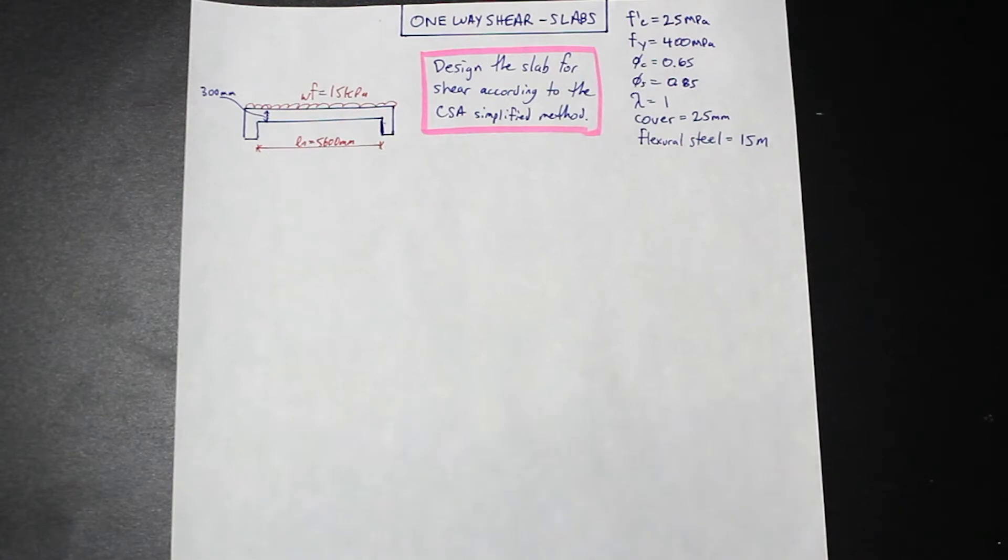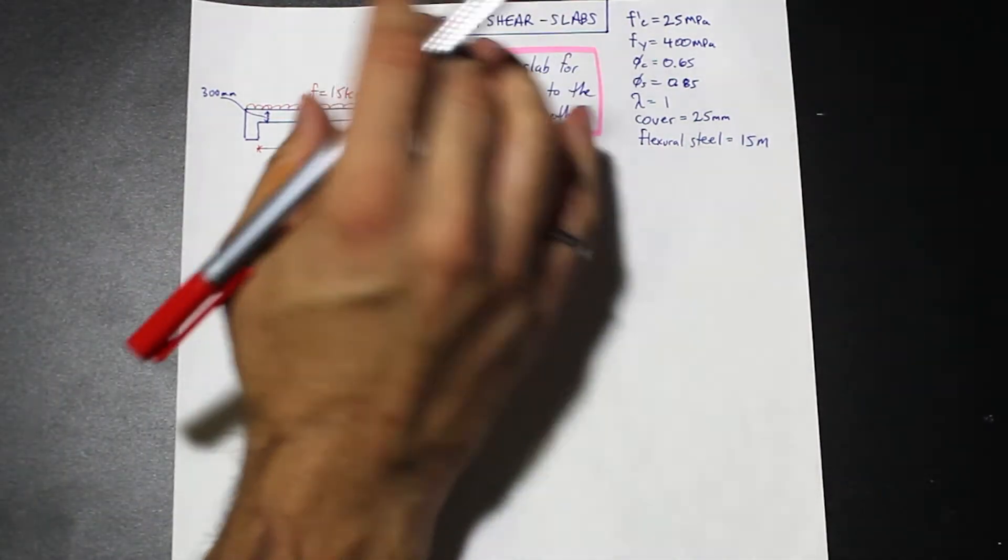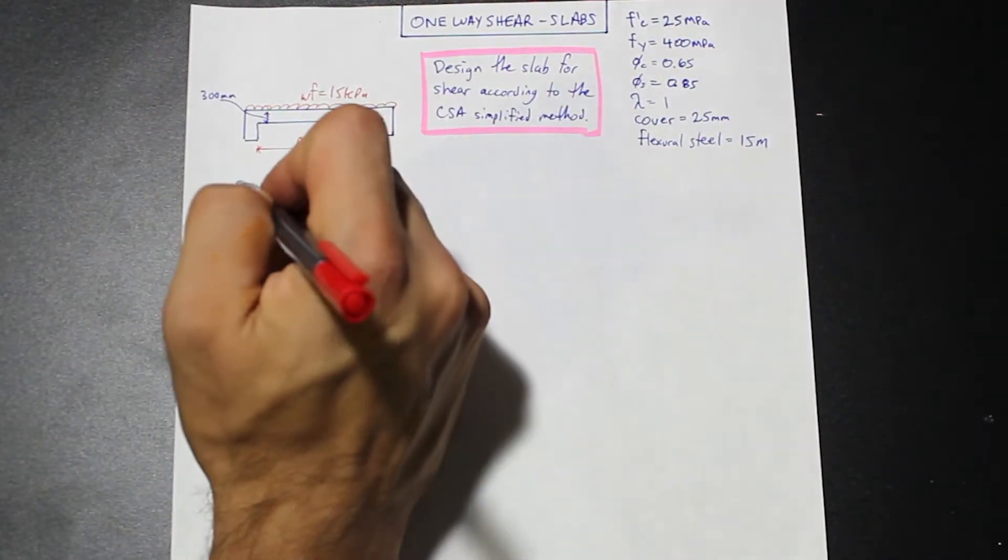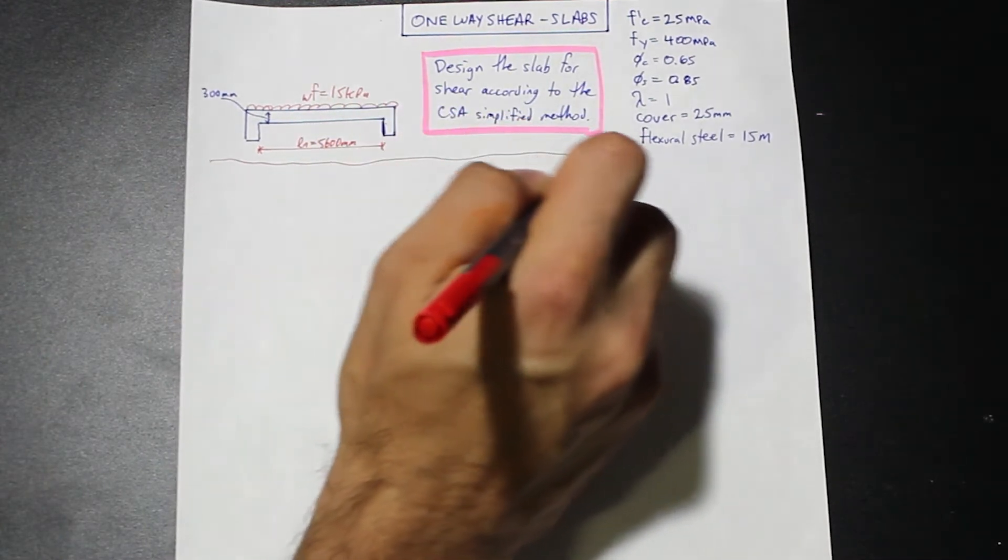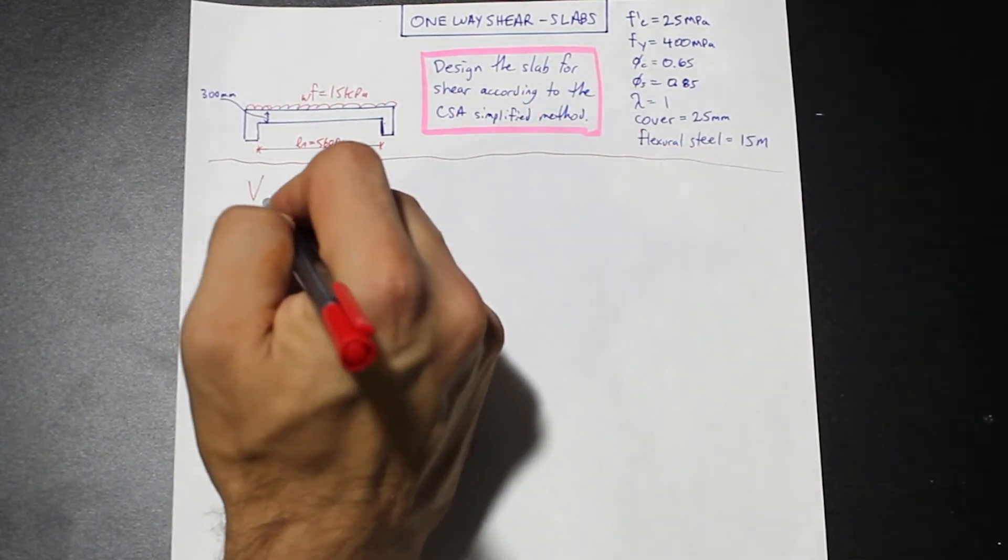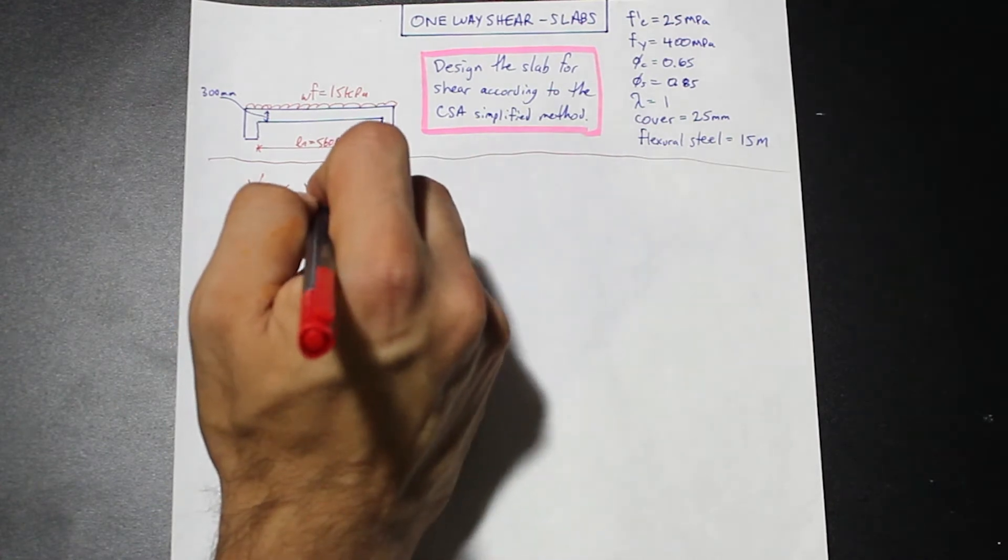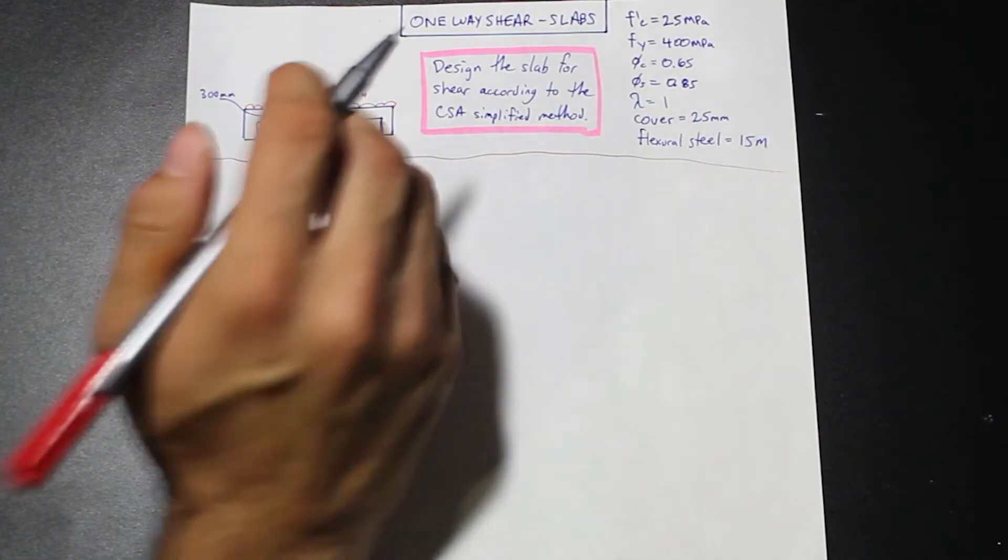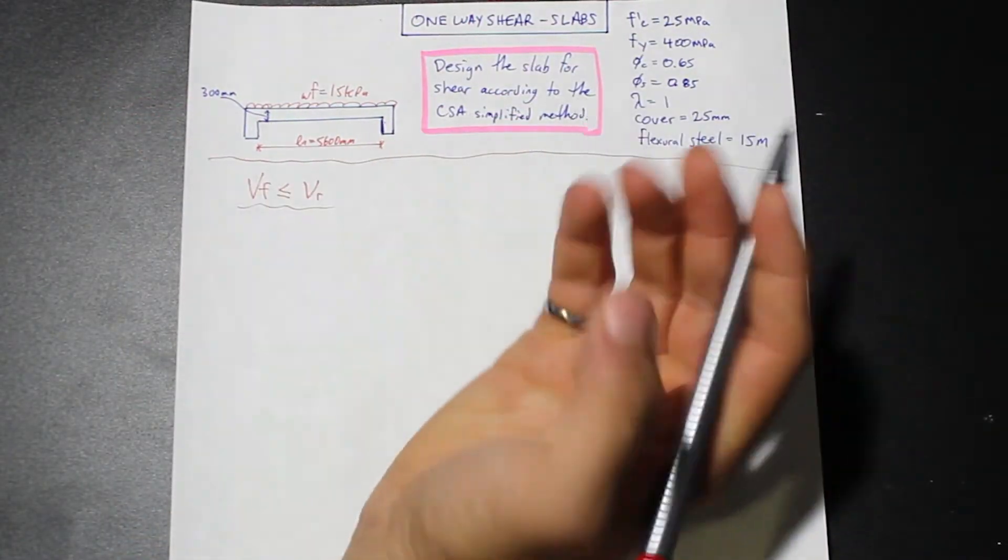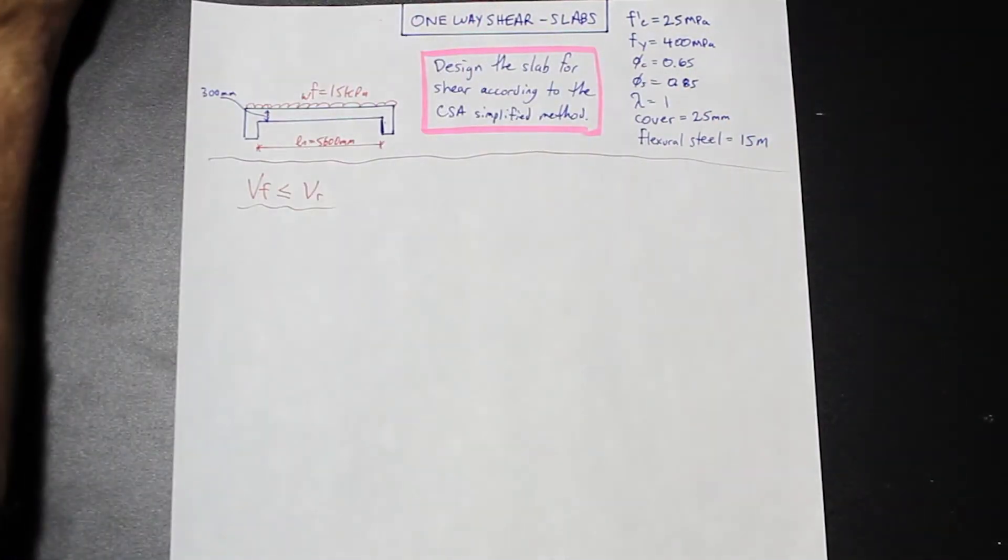That's where the simplified method came into play. As long as a member is not subjected to significant axial tension, and the tension stress increase in the longitudinal reinforcement at crack locations is less than 50 MPa, then we're okay to use the simplified method. Let's get right into this question. The general idea is that the factored shear force VF should be less than the shear resistance of our concrete member.